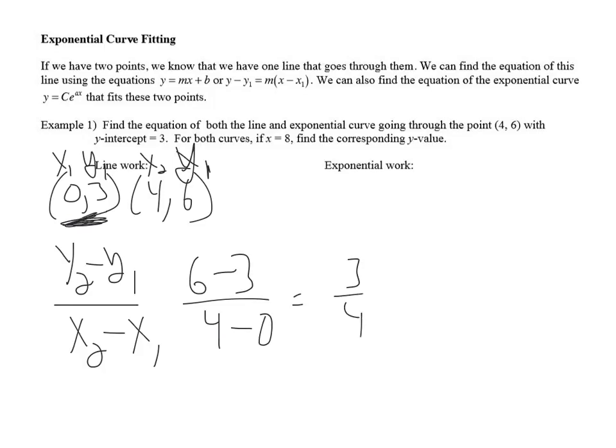So, 6 minus 3 over 4 minus 0 gives me a slope of 3 over 4. And then, because they told us the y-intercept, I don't have to do anything fancy. I can just write y equals 3/4x plus 3. And there's my line.